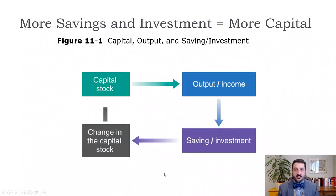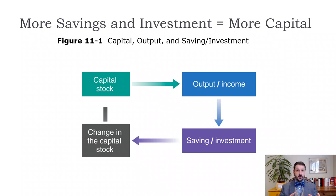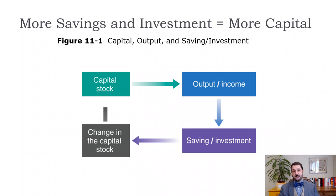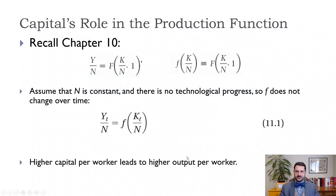The capital stock itself is a stock variable, obviously not a flow variable, but it is going to impact our flow variables. Output or income is a flow variable. Savings and investment is a flow variable. Depreciation is a flow variable. Savings and investment and depreciation are going to determine the change in the capital stock, and that's going to affect the capital stock in the next year. We're going to think about how capital changes over a year and how that affects output and therefore savings.